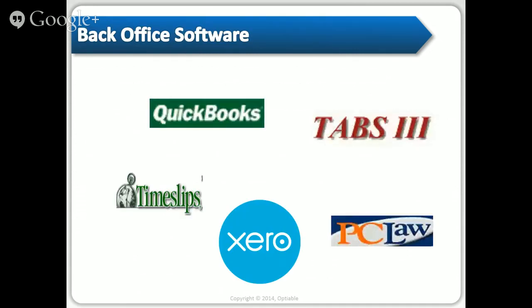What about back office software? This is the accounting side. QuickBooks is probably the most popular, but it has some issues. There's also Time Slips, Xero, Tabs 3, and PC Law. All the front office software we talked about integrates with QuickBooks because it's used so much. Conceptually, if you're in Clio or Amicus or Time Matters and you create a time entry, you can move that time entry or invoice into QuickBooks to bill it out — that's how the workflow works.